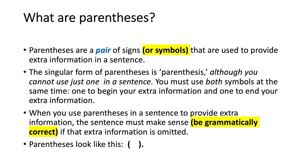Parentheses are a pair of signs or symbols that are used to provide extra information in a sentence. The singular form of parentheses is parenthesis. Although you cannot use just one in a sentence, you must use both symbols at the same time — one to begin your extra information and one to end your extra information. When you use parentheses in a sentence to provide extra information, the sentence must make sense, grammatically correct, if that extra information is omitted.